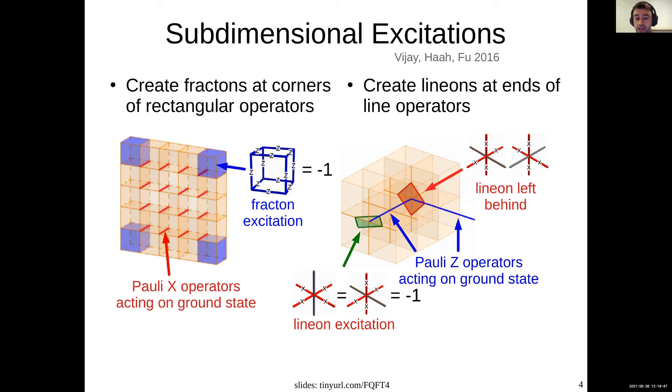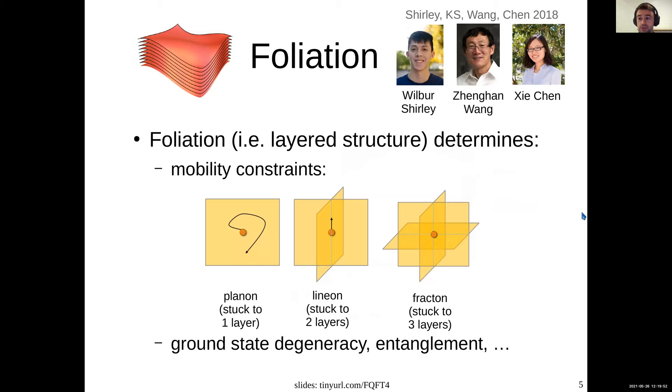In order to come up with a nice field theory description, the first thing we have to do is understand what is the space-time structure of these kinds of fracton models. We figured this out in a previous work with some of my collaborators, and we realized that the space-time structure is given by one or more foliations of space-time. That is, space-time consists of some stack of layers or actually possibly multiple stacks of layers. The X-cube has three stacks of layers, so stacks of XY planes, XZ planes, and YZ planes. These stacks of layers basically specify all the non-trivial fracton physics.